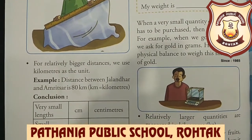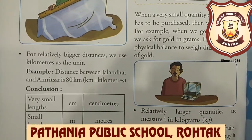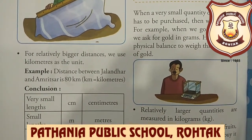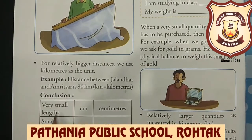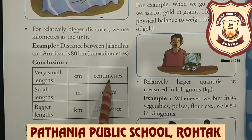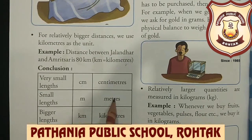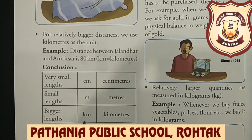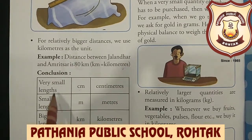For very small lengths we use centimeters (cm). For small lengths we use meters (m). For bigger distances we use kilometers (km). So to summarize: cm stands for centimeters, m stands for meters, and km stands for kilometers.